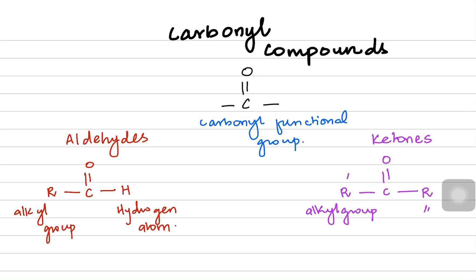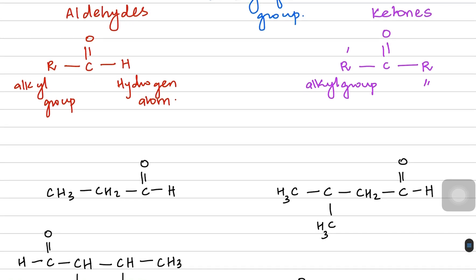Let's do some naming of carbonyl compounds so that we know how to distinguish between them, and then we'll talk about their chemical properties. The name of an aldehyde ends with the suffix '-al,' and the name of a ketone ends with the suffix '-one.' No numbering is needed for aldehydes because the carbonyl is always terminal, but in ketones there is numbering.